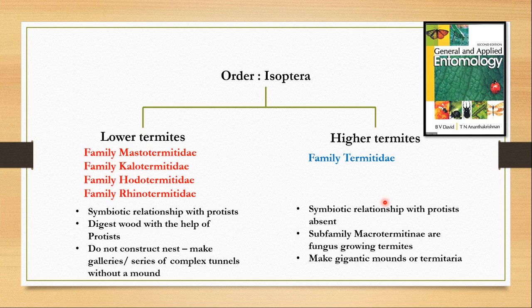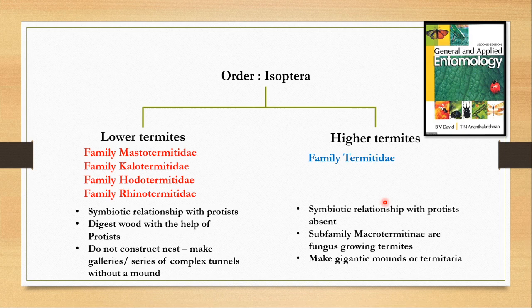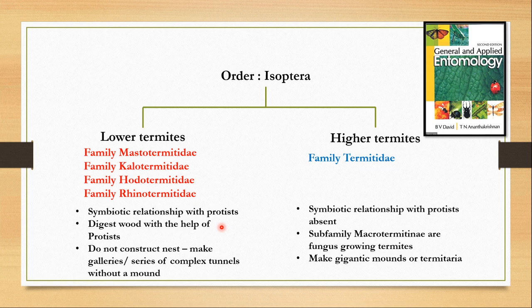Termites or order Isoptera can be classified into two groups: lower termites and higher termites. The lower termites have four major families — family Mastotermitidae, family Kalotermitidae, family Hodotermitidae and family Rhinotermitidae. Higher termites include only one family, which is family Termitidae. The difference between lower and higher termites is in their capability of digesting wood. Higher termites show a better capability of digesting wood and do not have any symbiotic relationship with any protist in their gut, whereas lower termites take help from protists that live symbiotically in their gut.